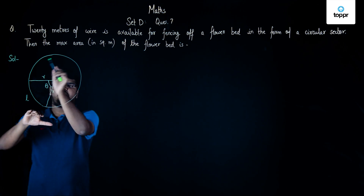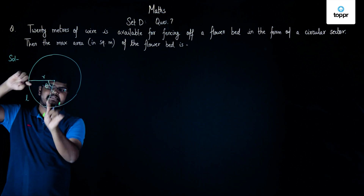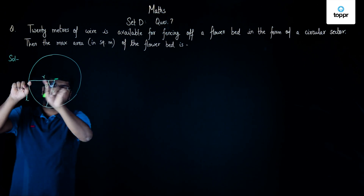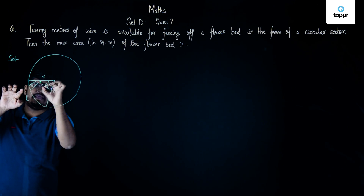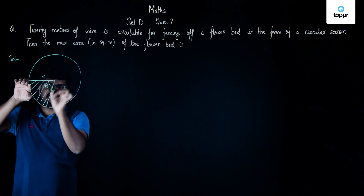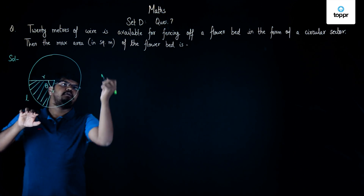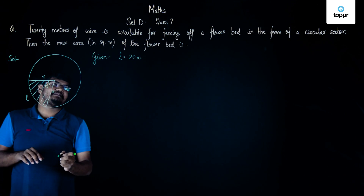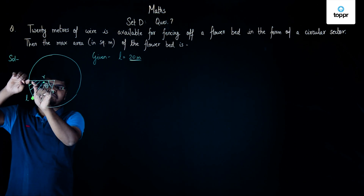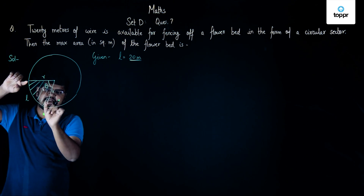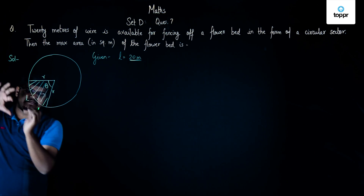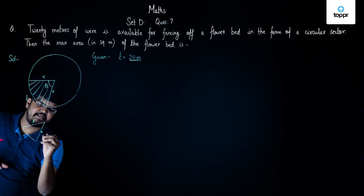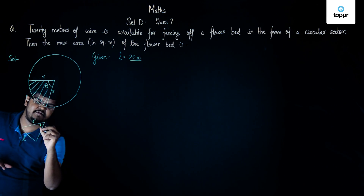Here I have formed a circle and from this circle I have taken a sector. Since we are to fence off using 20 meters of wire for this particular sector, we need to find the maximum area of this sector. If the sector is taken separately, we will have a radius component here, a radius component here, and the length of the arc here with angle theta.